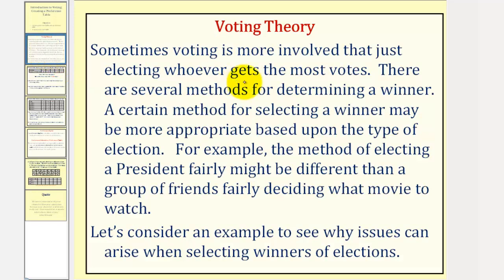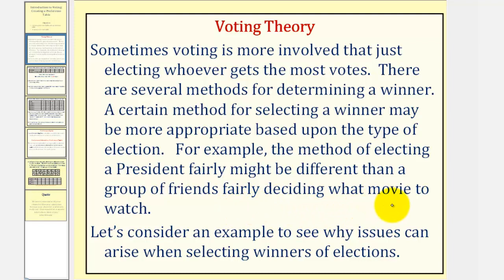Sometimes voting is more involved than just electing who gets the most votes. There are several methods for determining a winner of an election. A certain method for selecting a winner may be more appropriate based upon the type of election. For example, the method of electing a president fairly might be different than a group of friends fairly deciding what movie to watch.